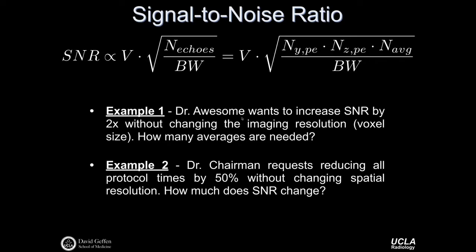Consider two examples. Dr. Awesome wants to increase SNR by twofold without changing imaging resolution — how many averages are needed? Since SNR scales with the square root of averages, we need four times as many averages, because the square root of four gives an increase of two. Increasing SNR through averaging is expensive in terms of time. In another scenario, Dr. Chairman requests reducing all protocol times by 50% without changing spatial resolution. Voxel volume is fixed, so we must cut the number of echoes by half. The square root of one-half yields approximately 0.707, meaning about a 70% retention of the original signal-to-noise.